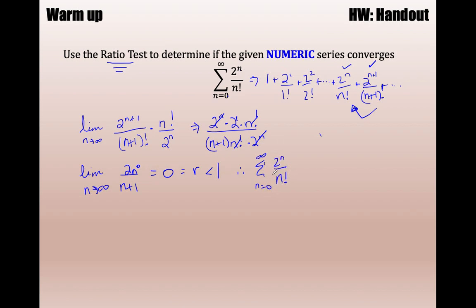Don't get confused with the limit comparison test, which requires that limit to be between 0 and infinity for you to conclude that both similar-behaving series do the same thing. Here you need the limit of the ratio — it's not a common ratio — the limit of the ratio just needs to be less than 1. Also, there's no absolute value because the ratio test for numeric series is only used for series with positive terms. That's why you don't have the absolute value bars like you do with a geometric test.